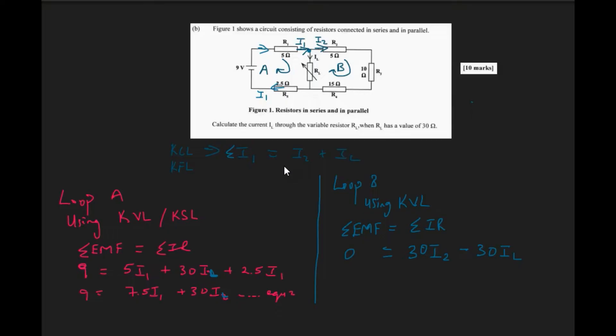Here is what Loop B looks like. In Loop B I would have chosen that my current is flowing clockwise, so therefore i2 will be flowing through R2, R3, and R4 respectively.